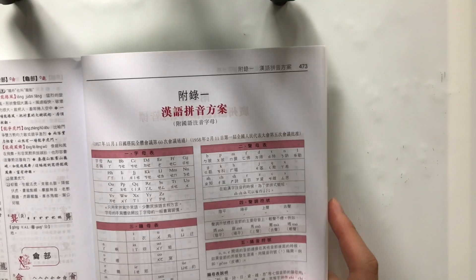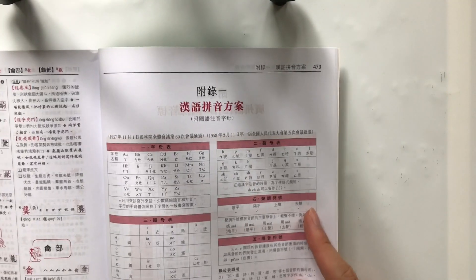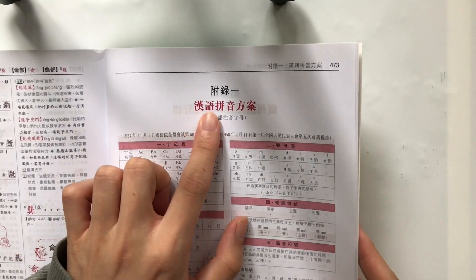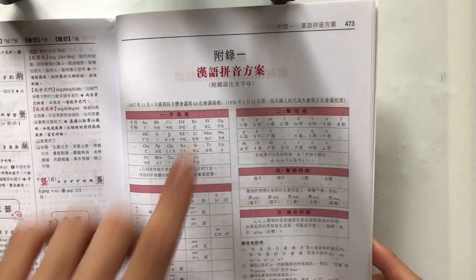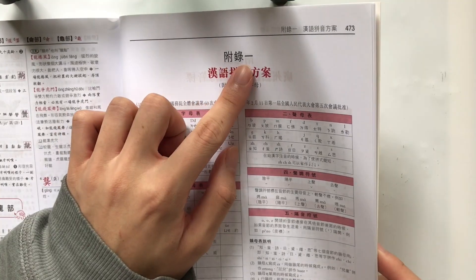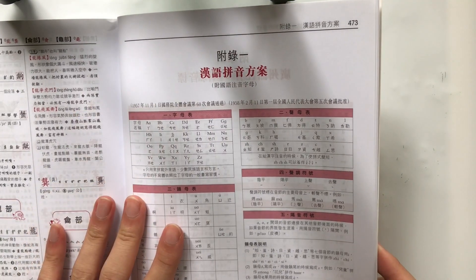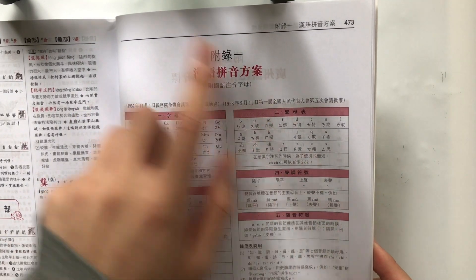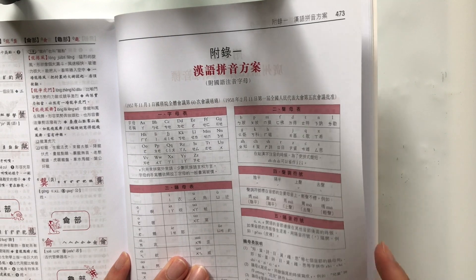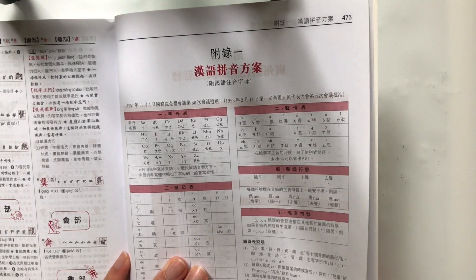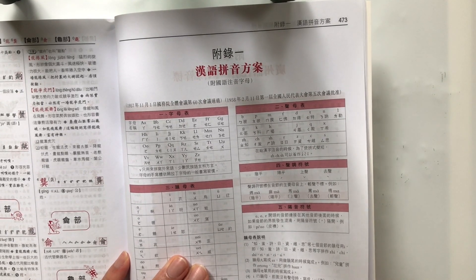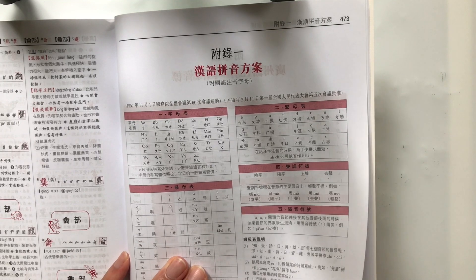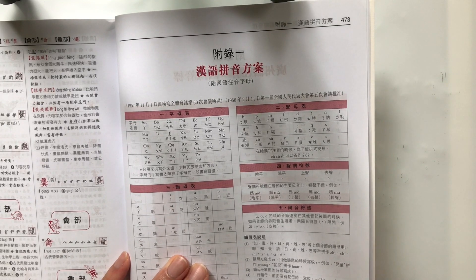Starting here, Appendix number 1 is 漢語拼音方法. By the way, 'appendix' in Cantonese is 附錄. This page gives you an introduction to the pinyin system of Mandarin, and if you guys ever switch to learning Mandarin from Cantonese, it's going to be a nice little introduction.